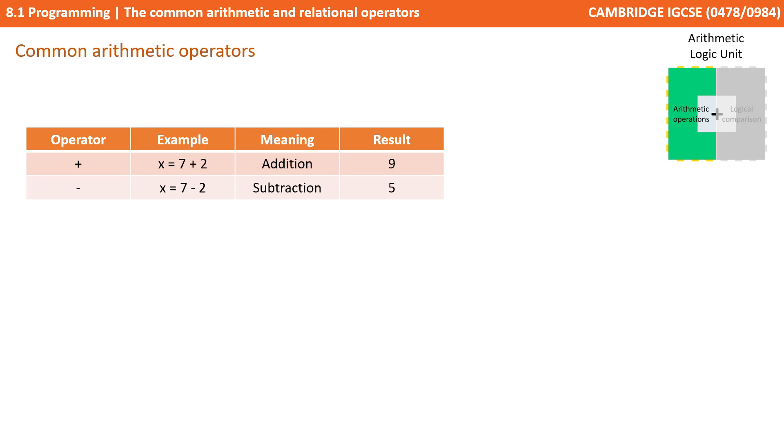Next, we have the minus symbol, so that's subtraction. So in this example, 7 minus 2, x would equal 5.